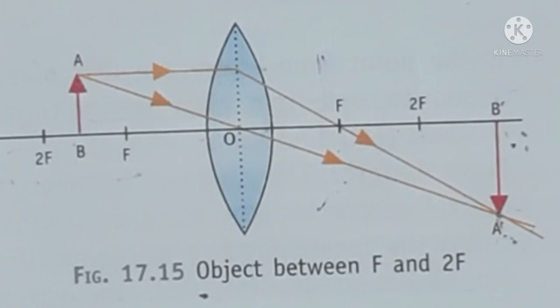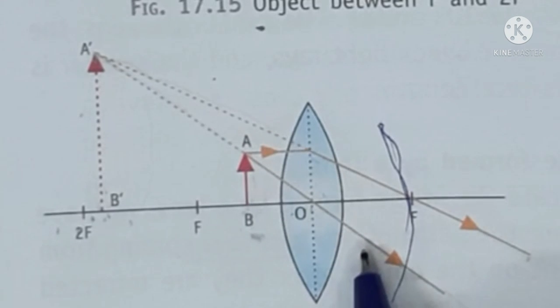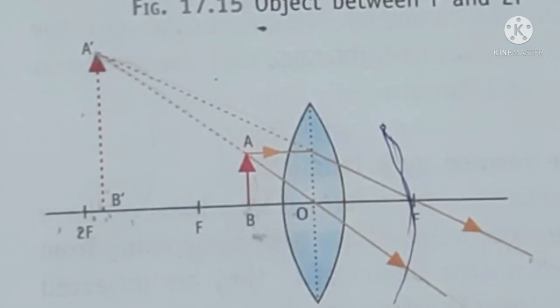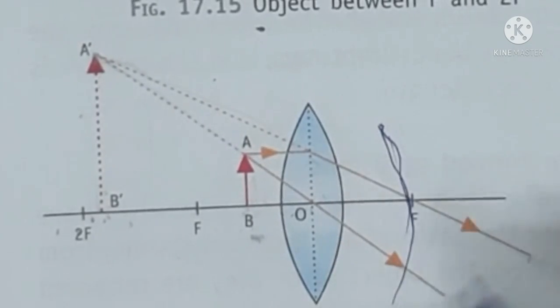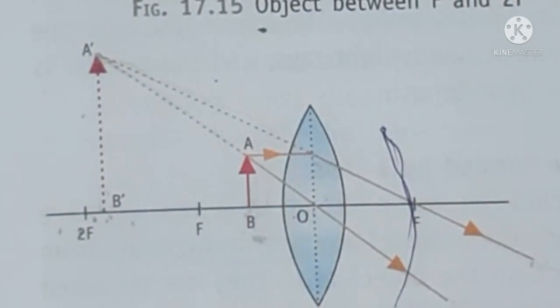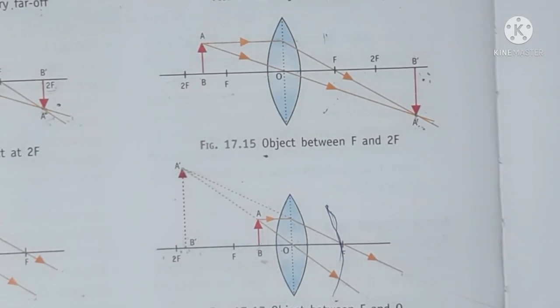Chik hai, agar main object ko bahut zyada paas liye aati hoon lens ke, toh dekho yahan pe toh light rays iske through ja rahi hai, woh light rays toh lens ke reflection ke baad they are diverging. Toh woh toh inside meet bhi nahi karne wali hain, toh retina pe toh meet hone ka sawaal hi nahi uthta. Aapko virtually pichhe meet karwana pad raha hai. Toh aapne kya dekha ki agar lens jo hai uski thickness fixed rehti hai.